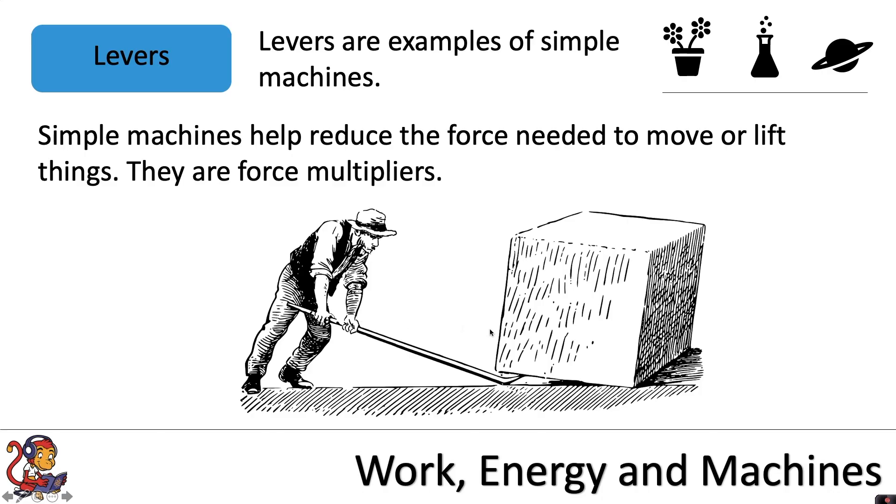In order for this man to be able to lift this box, he is using a lever. Here is the pivot for the lever. The man is going to apply the force at a distance which is far from the pivot. This is because the man can apply a small force to this end of the lever, downwards, through quite a large distance.